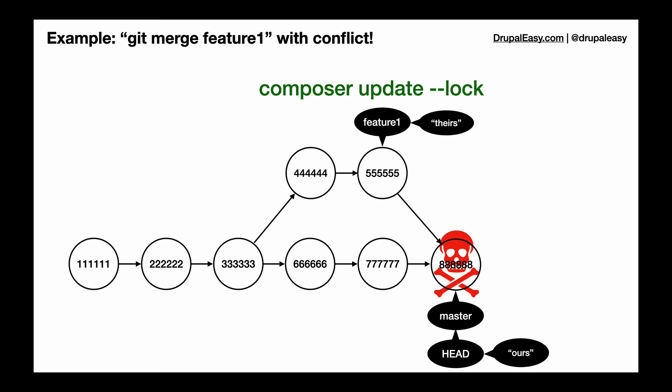So when we run this command, it will look at the code base. It will look what's in the composer.json. It will look what's in the composer.lock. It will look what's in the vendor directory, and it will regenerate that composer.lock file with an updated content hash that includes the dependencies from both the feature one and the master branch.